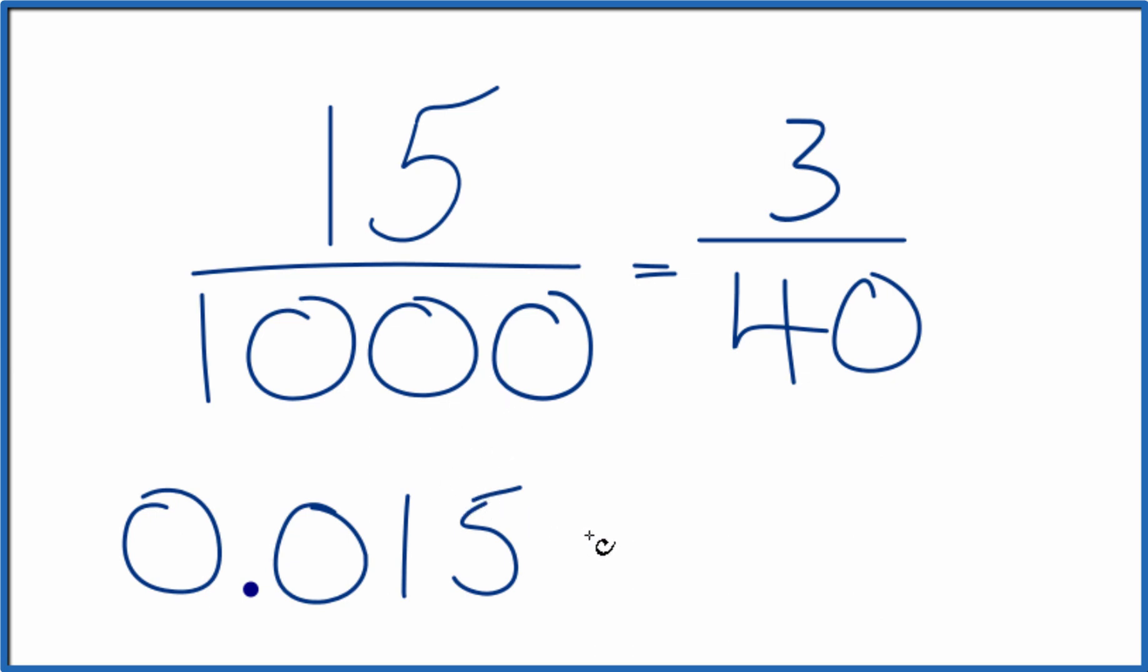If you want a ratio, you could just write 3 to 40. That would be our ratio in simplest terms here.